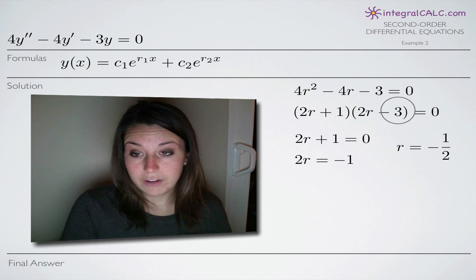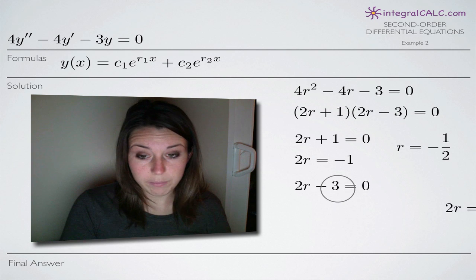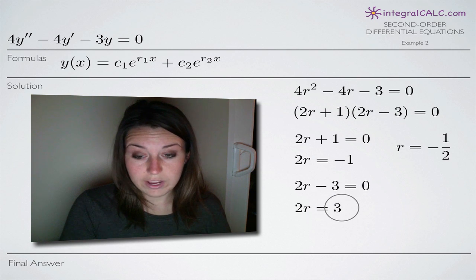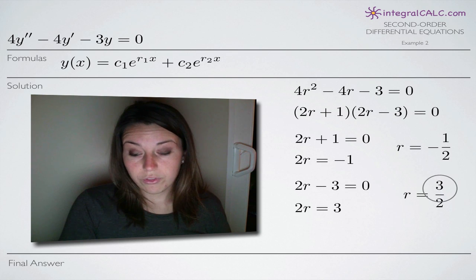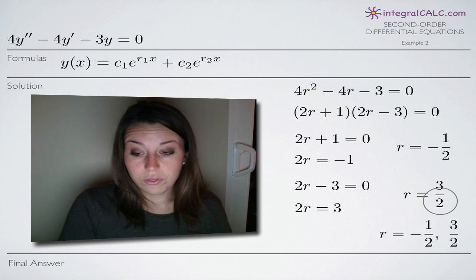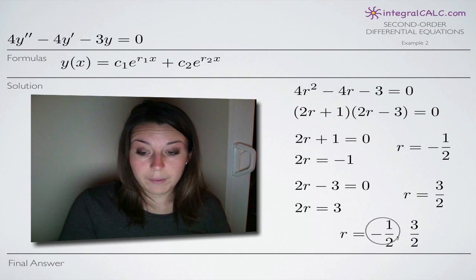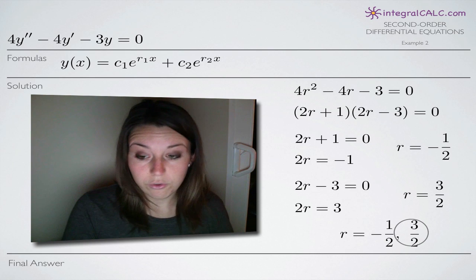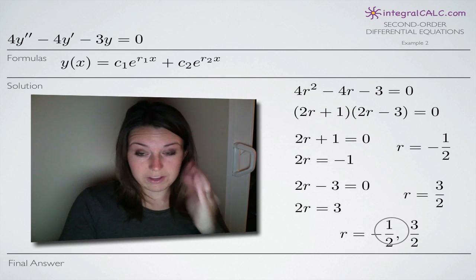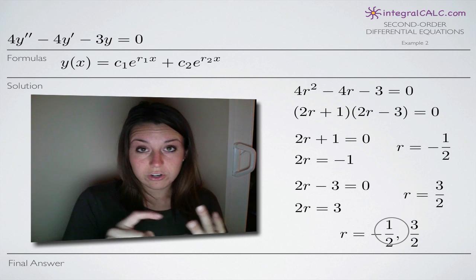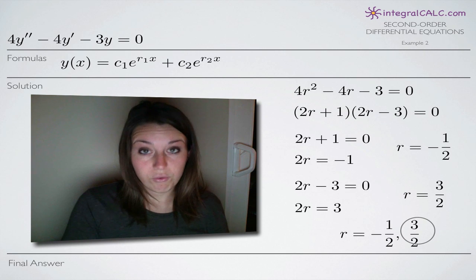Now taking 2r minus 3 and setting that equal to zero gives us r equals 3 halves. So our two solutions for r are negative one half and 3 halves. You'll always come up with two solutions because whether you factor, use the quadratic formula, or complete the square, you'll end up with two factors.